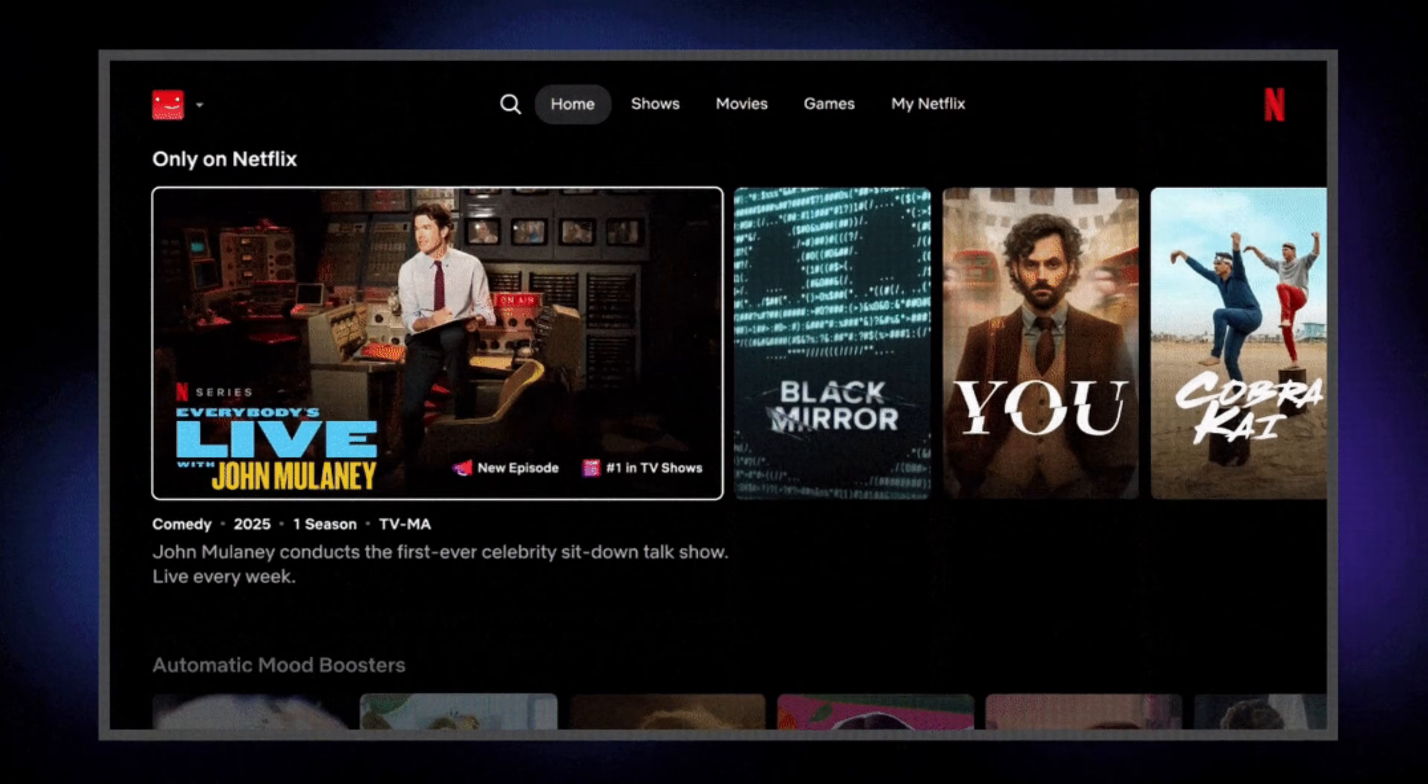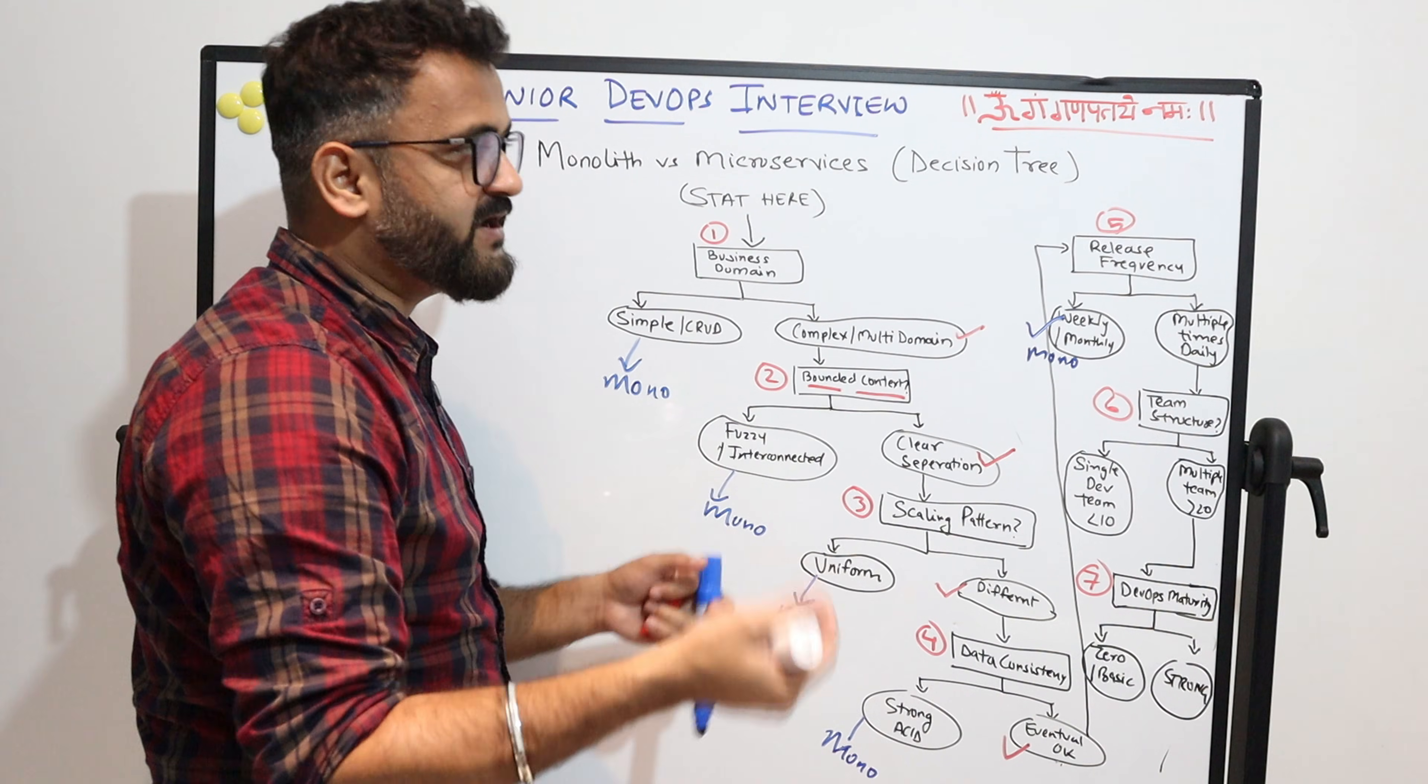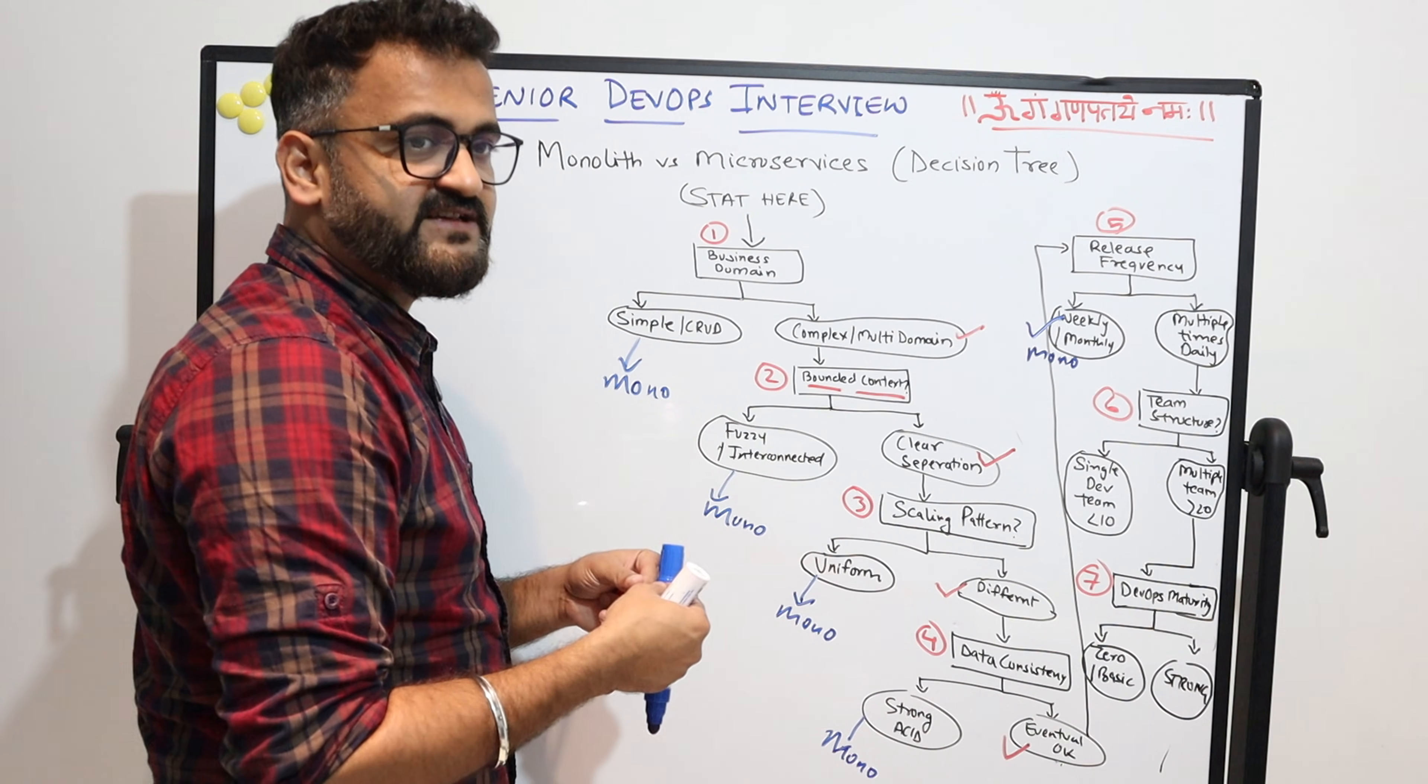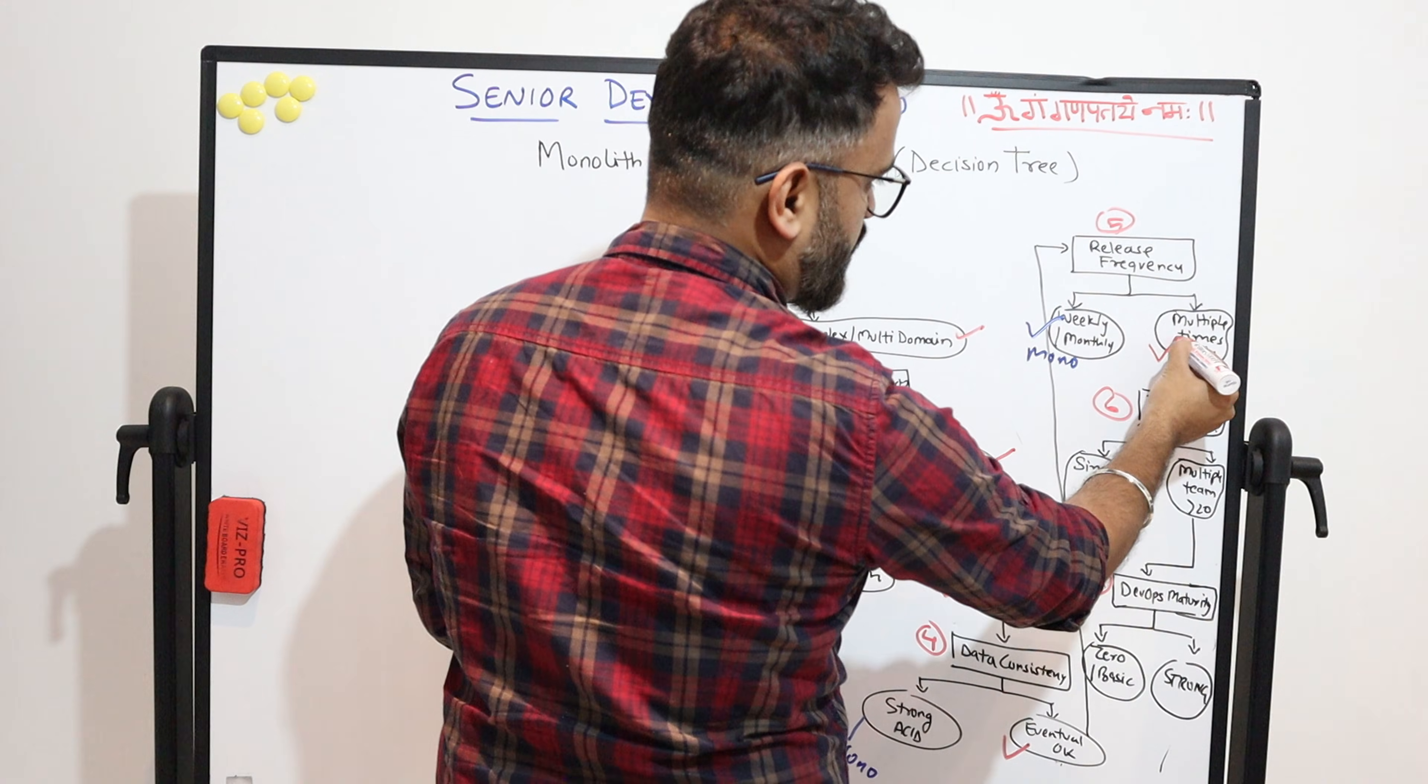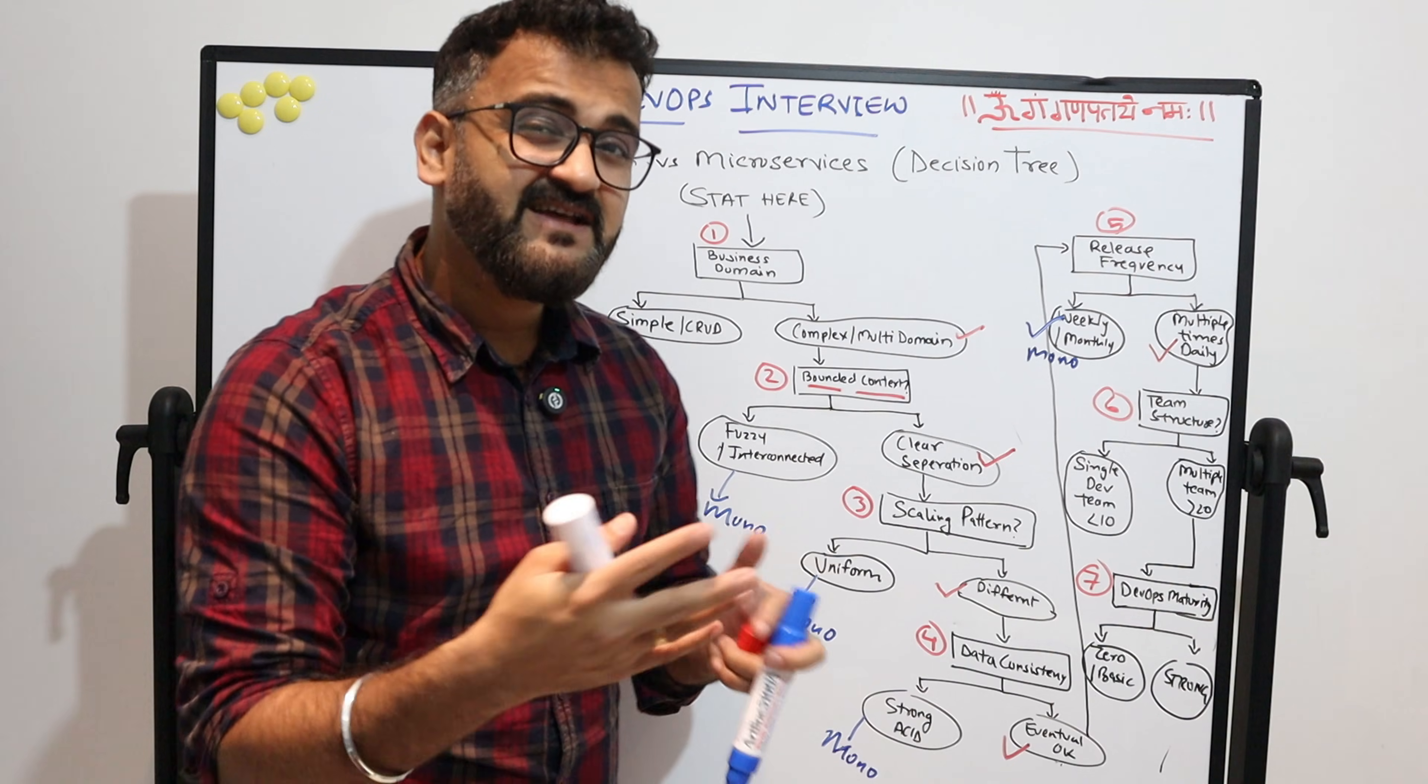If it is weekly or monthly, no need—it is a clear case of monolith. You don't need to deploy a microservices CI/CD pipeline for weekly or monthly releases.